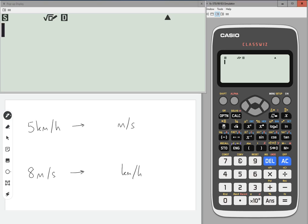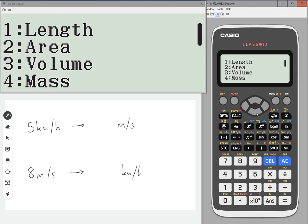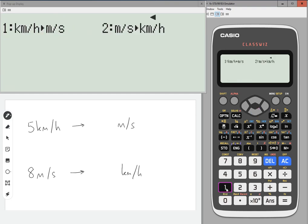So if we go to shift and then 8, and then scroll down to velocity, so number 1, you'll see it gives you these two options.